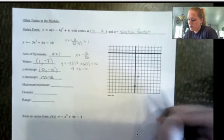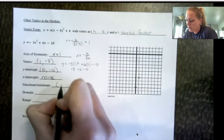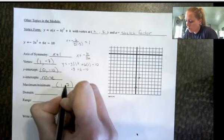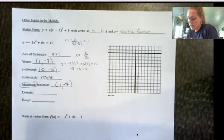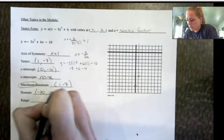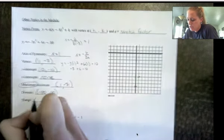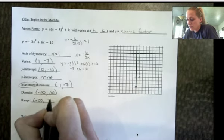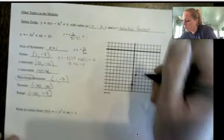And because it's opening down, this is a maximum. The maximum has an ordered pair of 1 negative 7. So it's a maximum, and that's the ordered pair. All quadratics have the domain of all real numbers. The range of this one, because it's opening down, is negative infinity up to that y-coordinate of the vertex, which is negative 7.